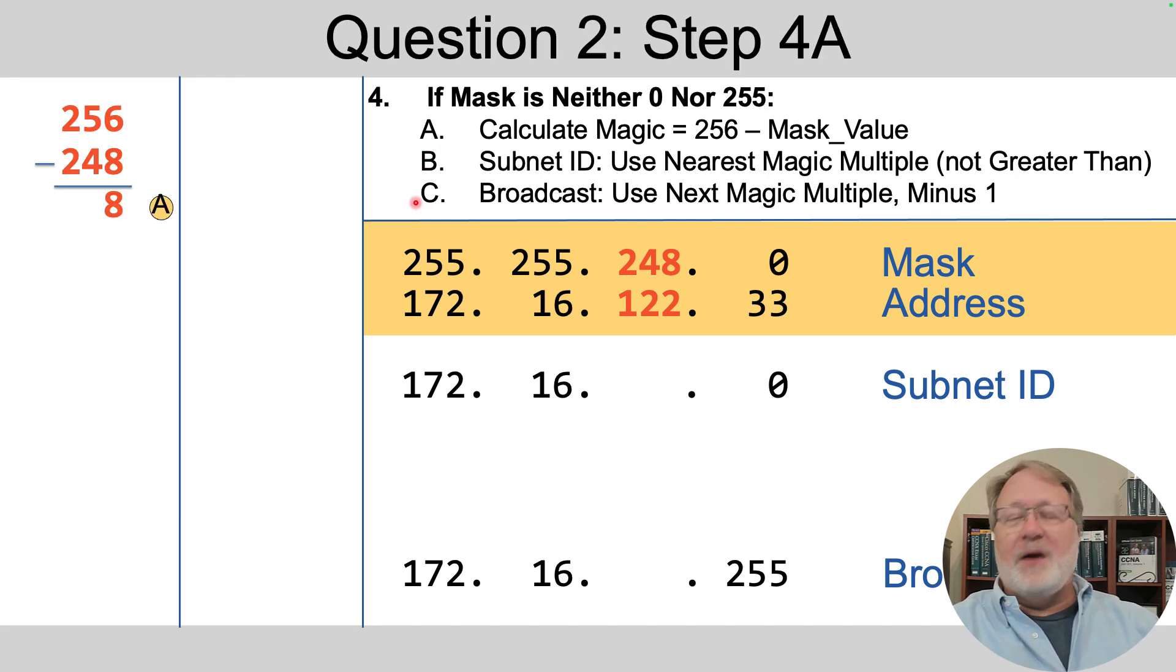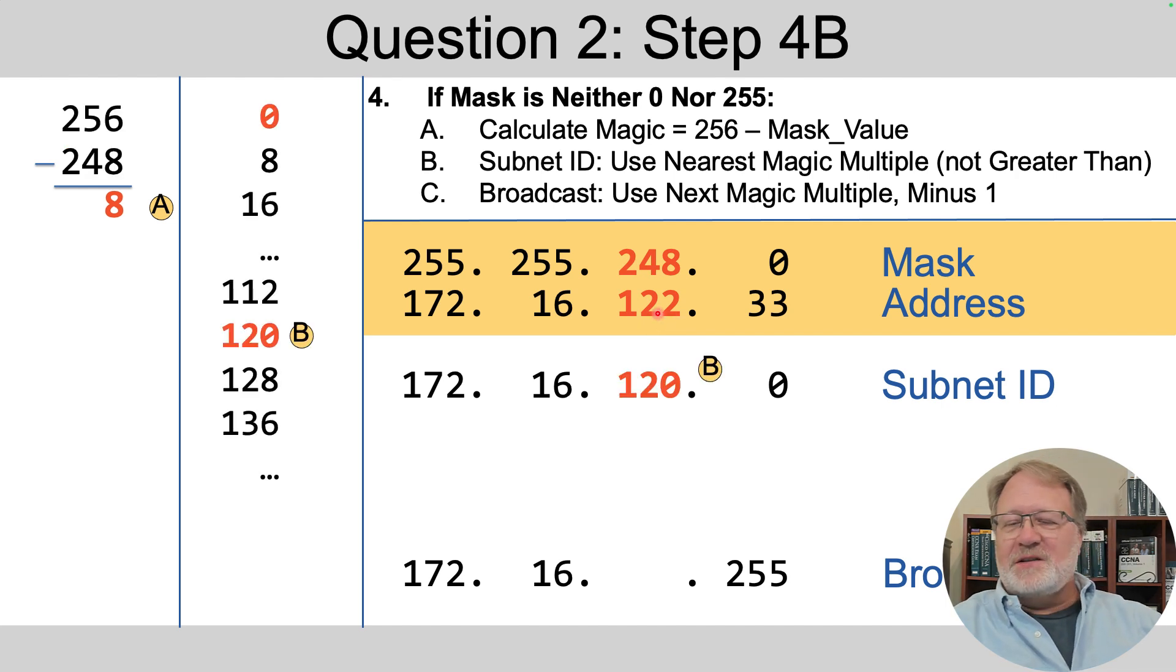So at step A, we calculate the magic number. It's always 256 minus the mask's value in this interesting octet. So 256 minus 248 gives us 8, which tells us this number in the subnet ID is going to be a multiple of 8. Which multiple? Well, we want to get close to 122 without going over.